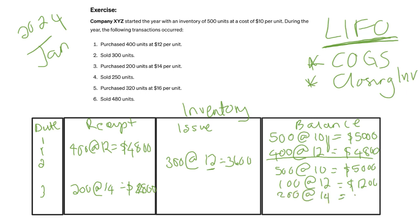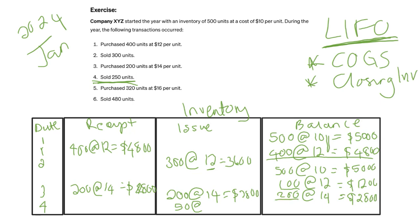On January 4th, we sold 250 units. Using LIFO, we start with the last purchase — the 200 units at $14, totaling $2,800. We still need 50 more units to reach 250 sold, so we take those 50 from the 100 units at $12. That's the second-last layer. So 50 × 12 = $600.